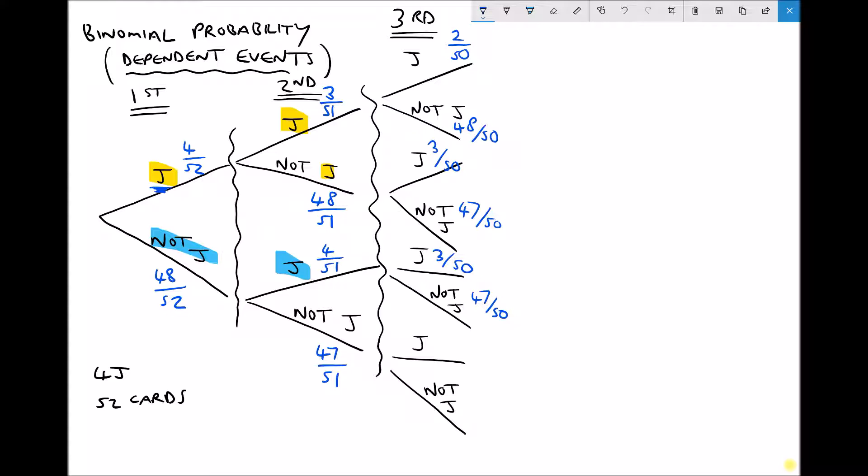And finally, if we draw two cards and neither are jacks, there's still four jacks in the pack out of the remaining 50, and there's 46 non-jacks.